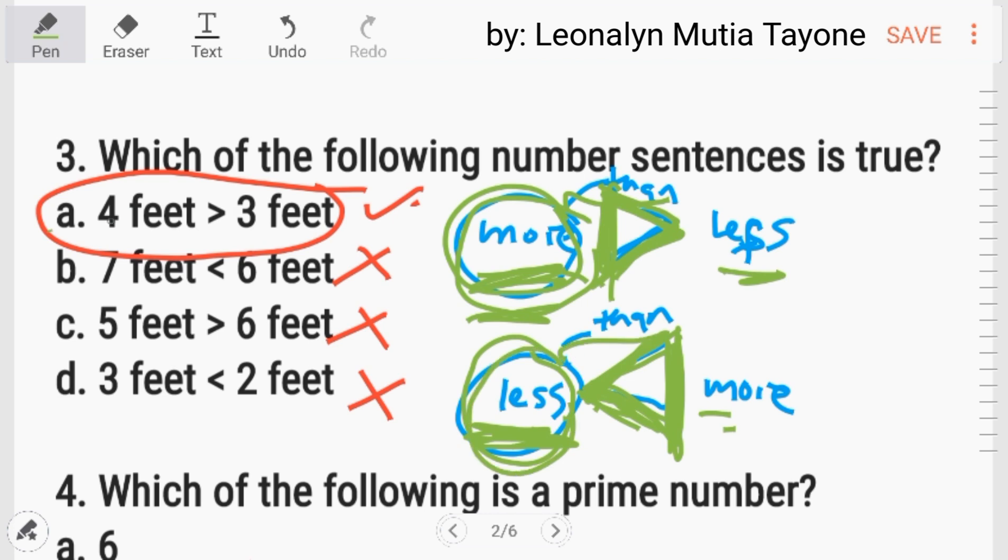So sa letter A, four feet is more than three. Tama naman. Itong letter B, dapat, ang sign dito ay paganoon. Seven is more than six. Sa letter C, five is less than six. D, three is more than two.